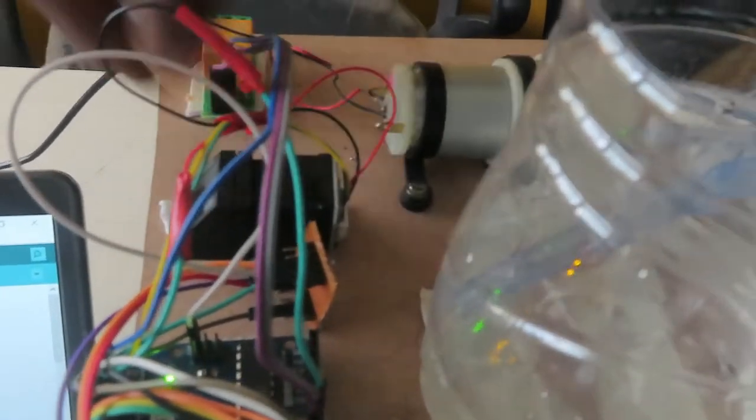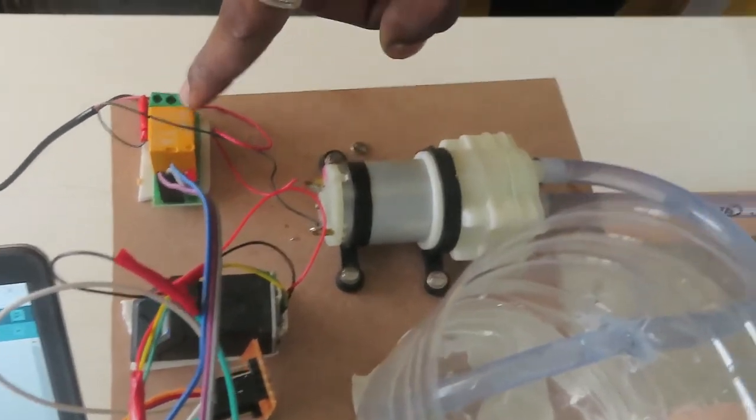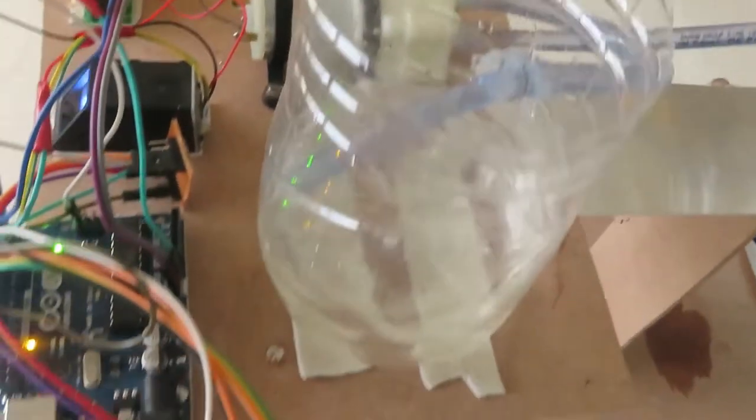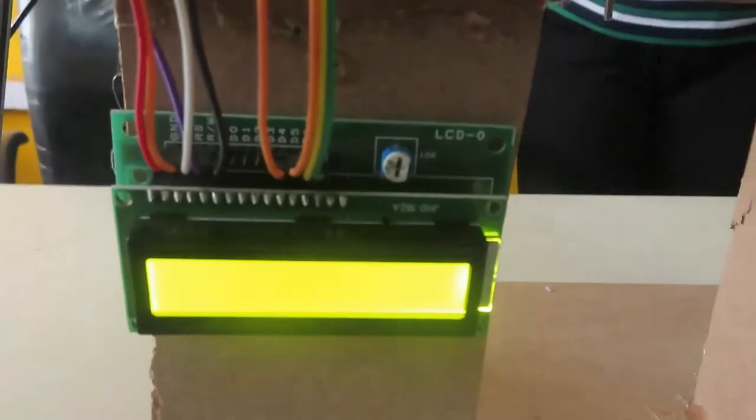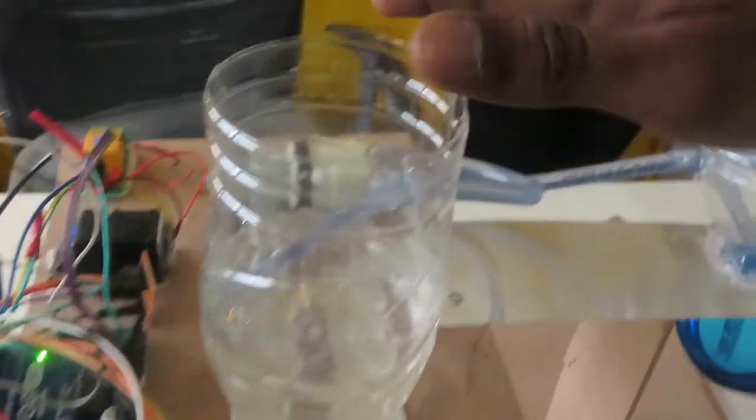Fingerprint sensor, one channel relay, submerge pump, LCD display. This one is the coffee storage place and this one is the dispensing place.